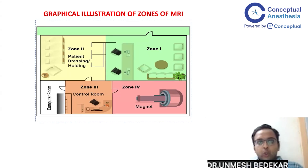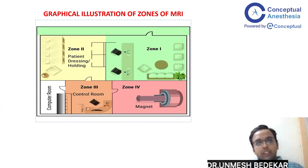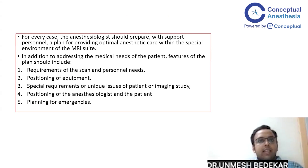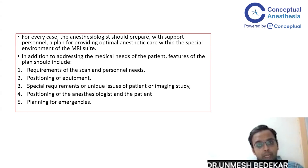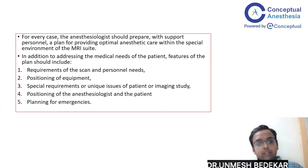This is a graphical demonstration of the various zones: Zone 1 is the reception area, Zone 2 is the patient holding and history-taking area, Zone 3 is the control or computer room, and Zone 4 is where the actual magnet lies. For every MR case, the anesthesiologist should prepare — with support staff — a plan for providing optimal anesthesia care. Since most MRI suites are away from the operating theatre, anesthetists may be unfamiliar with the surroundings, such as where the emergency drug cart, ET tube, or laryngoscope are kept. All these must be confirmed before taking the patient inside.